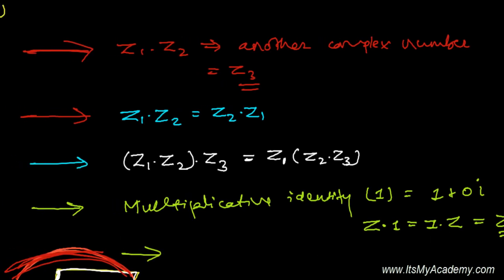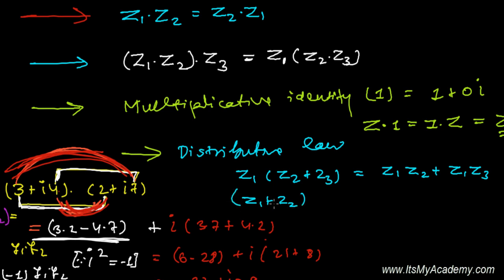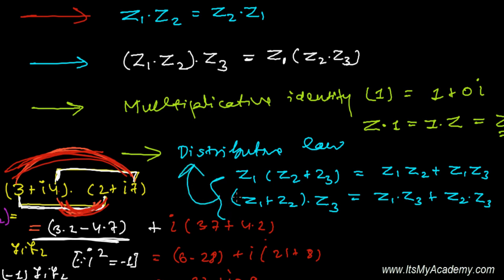Fifth, multiplication of complex numbers follows the distributive law. If you have three complex numbers, Z1 multiplying the sum of Z2 and Z3 equals Z1·Z2 plus Z1·Z3. Similarly, (Z1 plus Z2) times Z3 equals Z1·Z3 plus Z2·Z3. It follows the distributive law just like in the real number system.